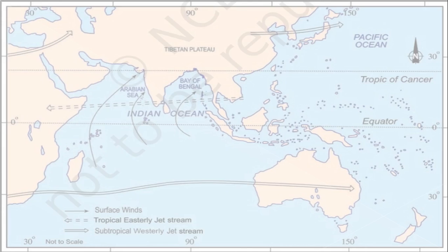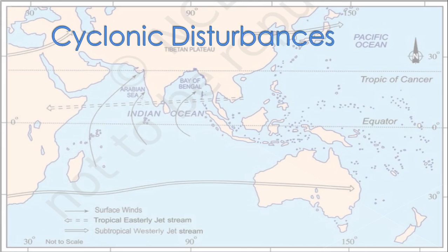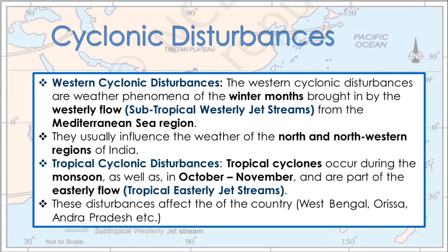Look at the diagram of cyclonic disturbance. The western cyclonic disturbances are weather phenomena of the winter months, brought in by the westerly flow — the subtropical westerly jet stream — from the Mediterranean Sea region.